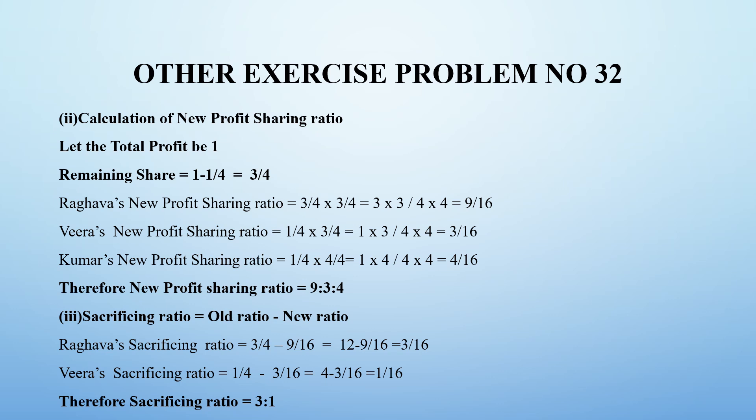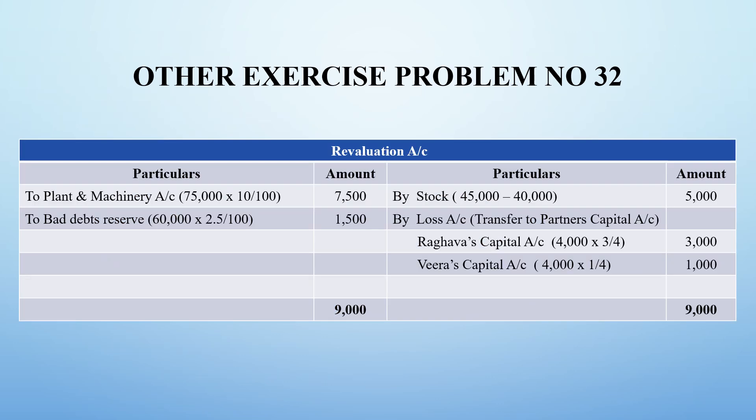The sacrificing ratio formula is old ratio minus new ratio. For Raghava: 3/4 minus 9/16. Taking the highest common denominator of 16 — 16 divided by 4 is 4 times, so 4×3 is 12, and 9×1 is 9; 12 minus 9 gives 3 by 16. For Veera: old ratio 1/4 minus new ratio 3/16; 4×1 is 4, minus 3 gives 1 by 16. Therefore sacrificing ratio is 3:1. Grand total on both sides is 9,000 rupees.